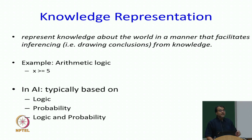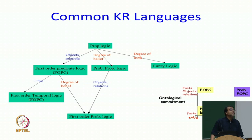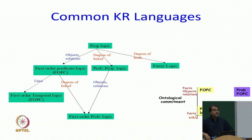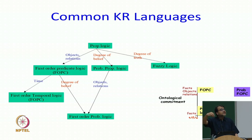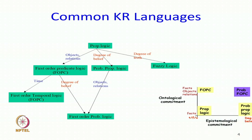There are many kinds of common knowledge representation languages. Propositional logic is one. First order temporal logic is first order logic with an element of time in it. Probabilistic propositional logic — we will study that; Bayesian networks is one example, where we say a fact may be true with some probability. Fuzzy logic says something else. All of these logics make different kinds of ontological commitments and different kinds of epistemological commitments — let us understand what that means.